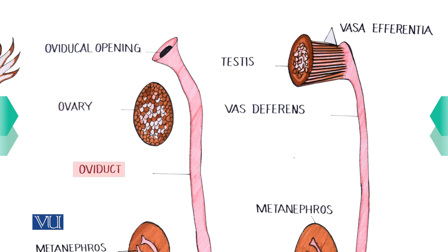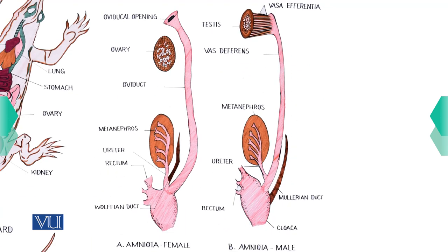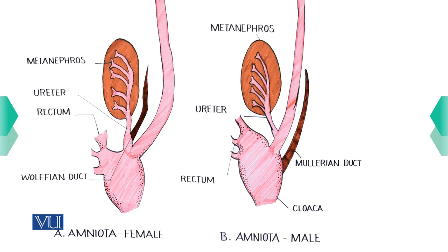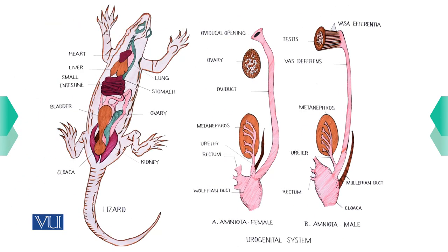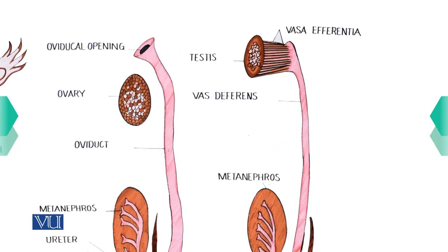The oviduct, which passes gametes, opens into the cloaca. This is the female structure. In the male, the kidney is similarly present — called metanephric — and inside the kidney, metanephrons are present which form urine by absorbing extra material from the blood and removing it from the body through the cloaca. In males, the testes are also present for producing male gametes.